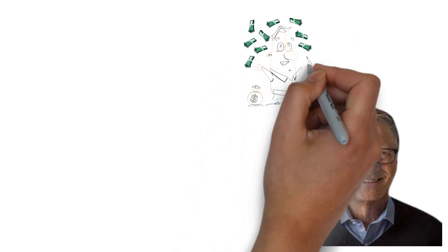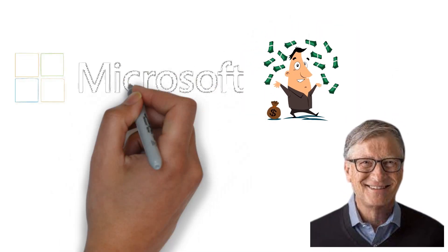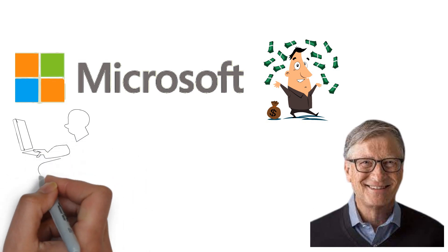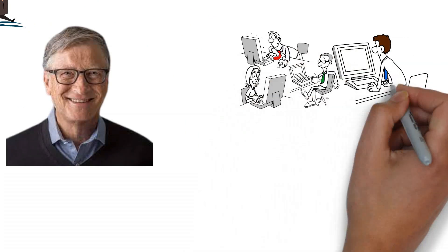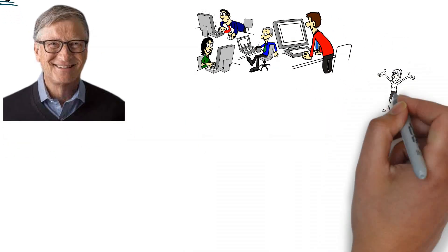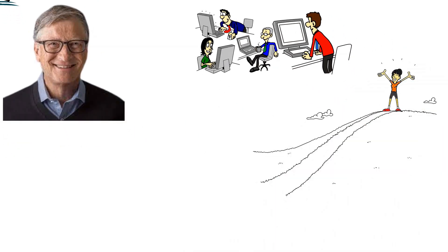Take the example of Bill Gates, one of the wealthiest people in the world. In the early days of Microsoft, he realized he needed to step back from writing code to focus on building the business. By delegating coding tasks to his team, Gates could concentrate on strategic decisions that would eventually make Microsoft a global powerhouse.